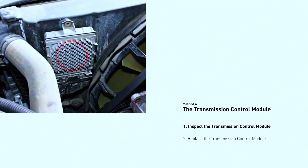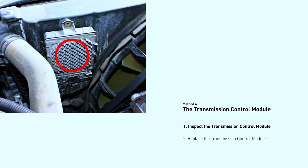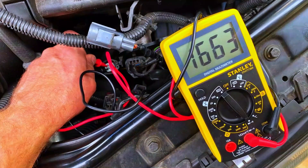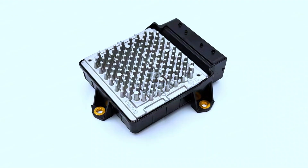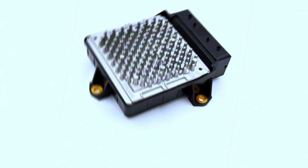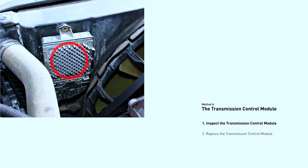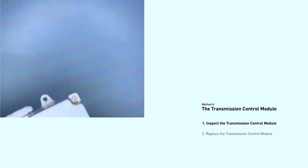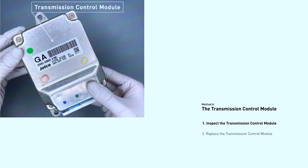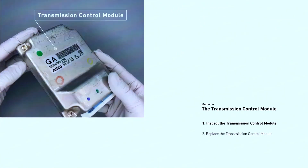Test the transmission control module. If the wiring looks good, the TCM might be at fault. Using a multimeter, check for proper voltage and continuity. If the TCM is faulty, it may need to be replaced.